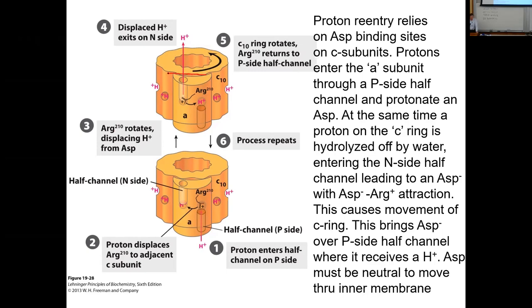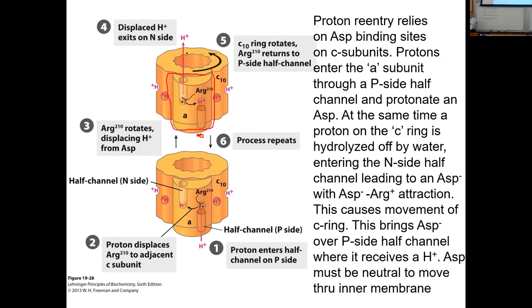Concept two: the A subunit has two half channels. By half channel, it means there is an opening that begins on the inner membrane side and moves far enough to overlay an aspartate. The other half channel opens deeply enough to overlay an aspartate on the outside of the cylinder, but opens all the way to the interior of the matrix — so it is in contact with the solution filling the matrix.